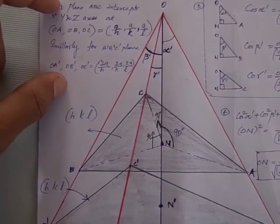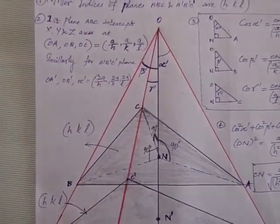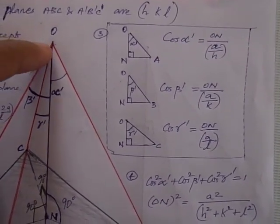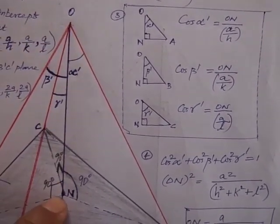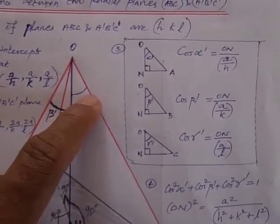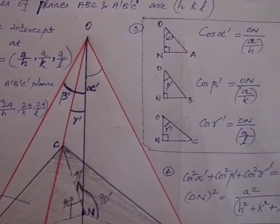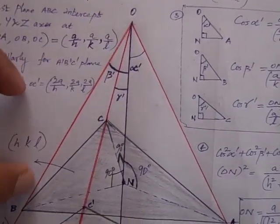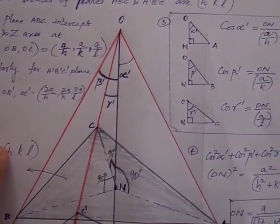That completes point number 2, where we calculated the intercepts on the X, Y, Z axes. Now we move on to point number 3, where the normal is taken into consideration. With respect to the normal ON and each axis, the angles are alpha', beta', and gamma' respectively for the X, Y, and Z axes.